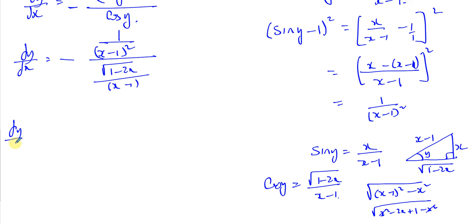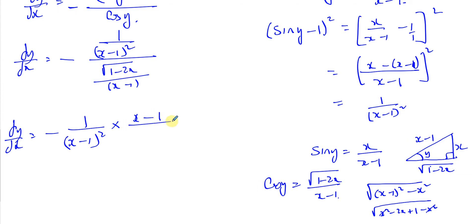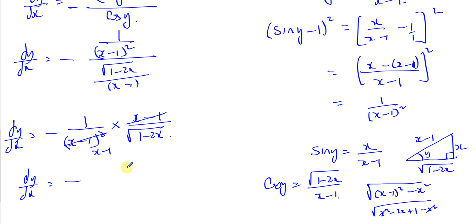Substituting everything: dy/dx equals 1 over (x minus 1) squared divided by minus (square root of (1 minus 2x) over (x minus 1)). Dividing by a fraction means multiplying by its reciprocal. One of the (x minus 1) factors cancels, leaving dy/dx equals minus 1 over (x minus 1) times the square root of (1 minus 2x). That is the answer.